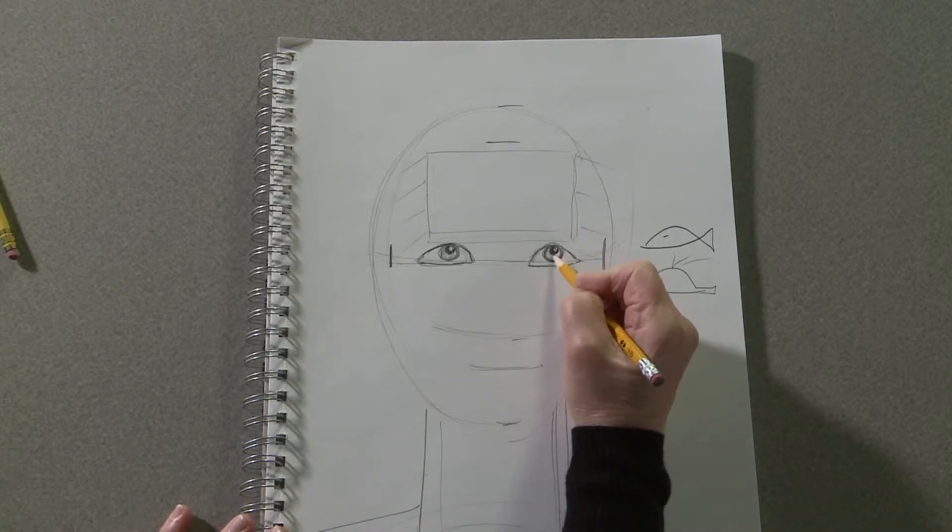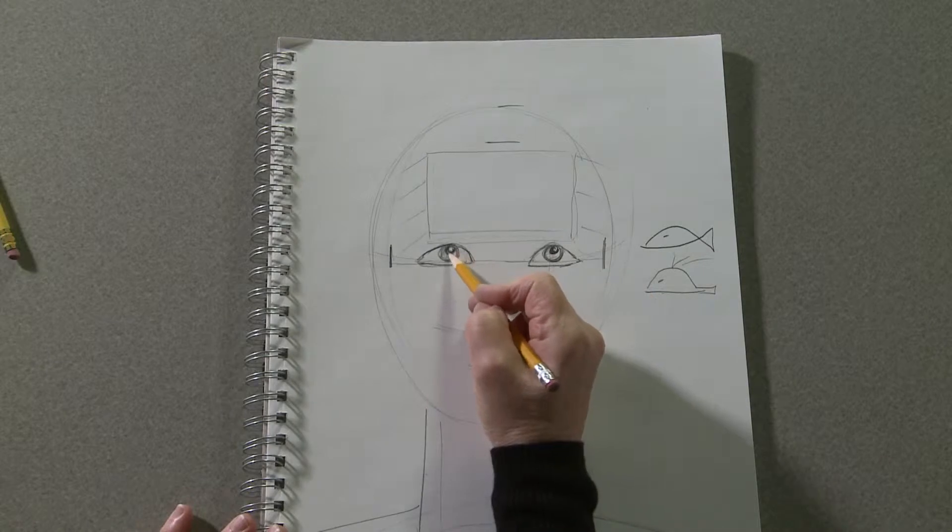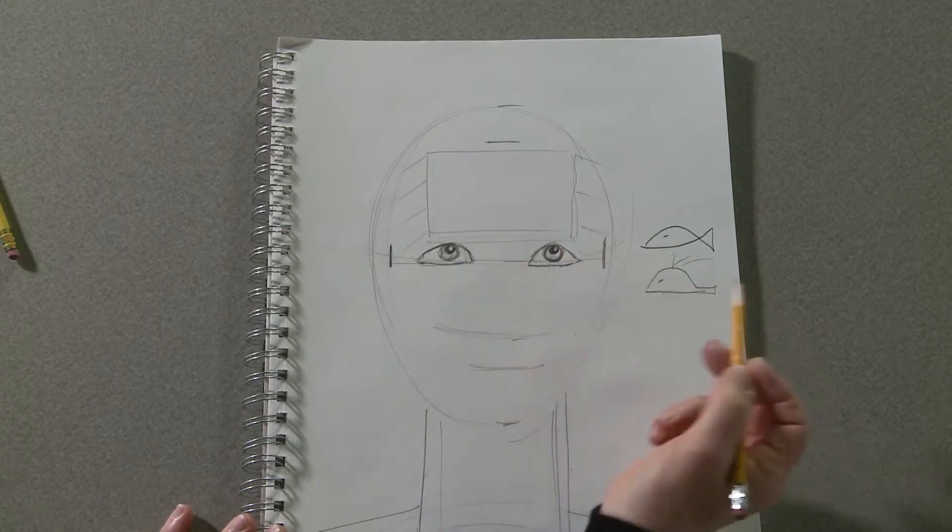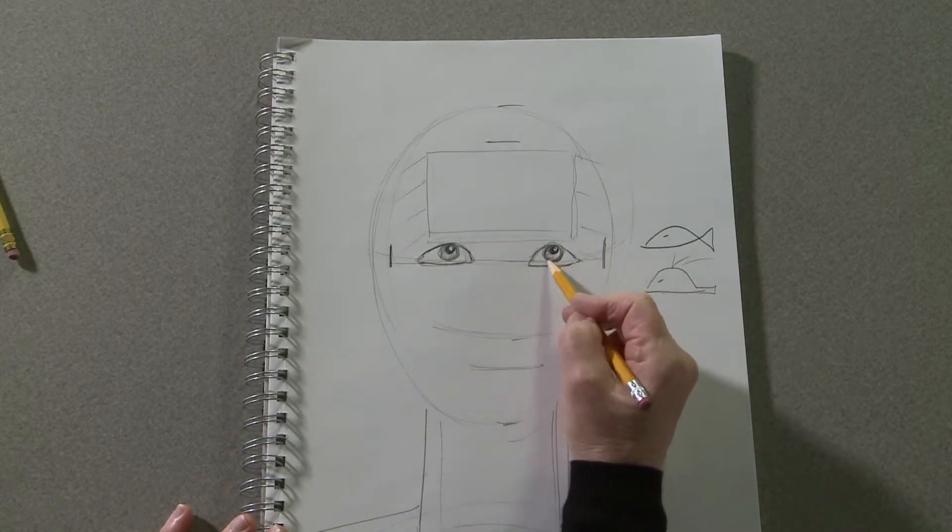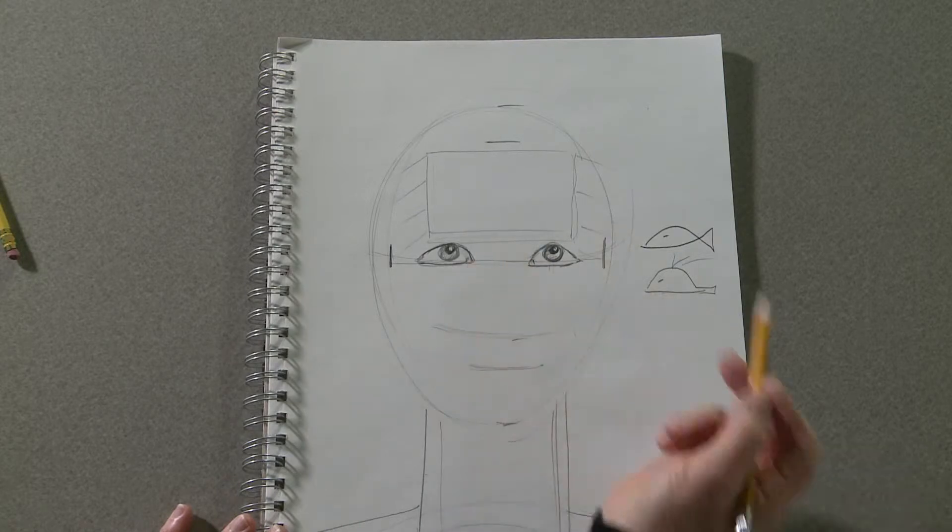It's nice to leave a little white, make them a nice rich black, but leave a little white to represent that your eyes are moist and have shine.